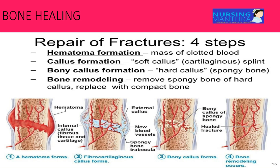Inflammatory cells - examples: macrophages, monocytes, lymphocytes, and fibroblasts - all infiltrate the bone during a fracture. With all these cells, granulation tissue forms, resulting in ingrowth of vascular tissue and migration of mesenchymal cells. The next stage is the repair stage.